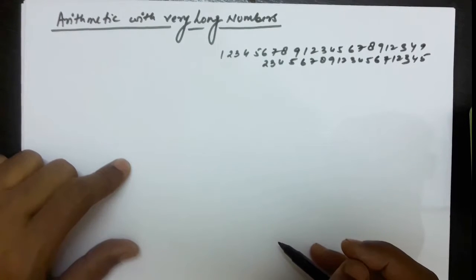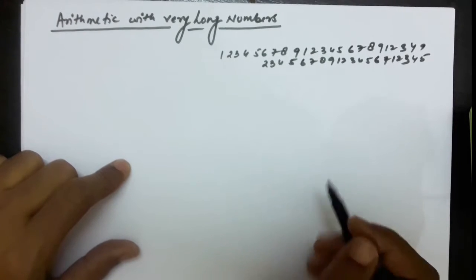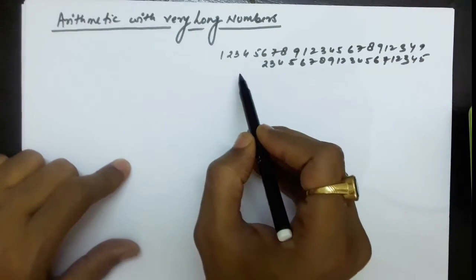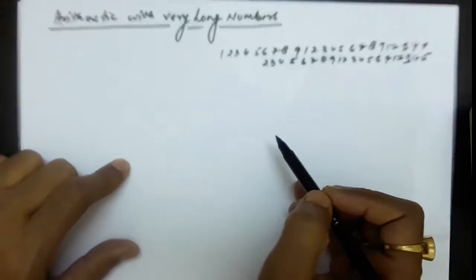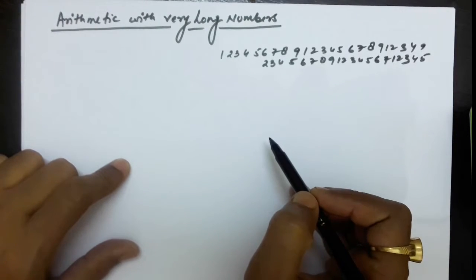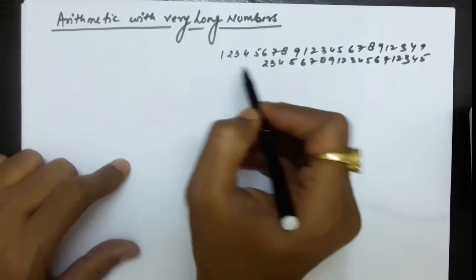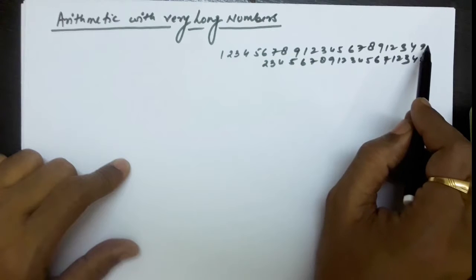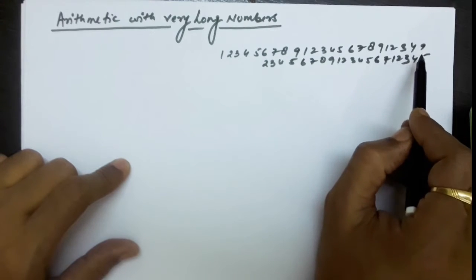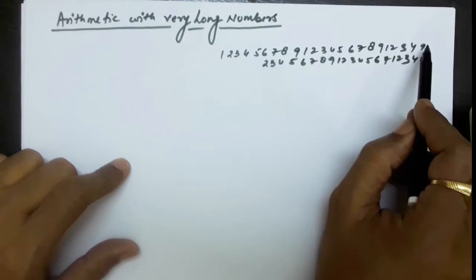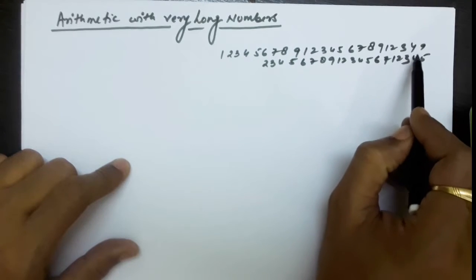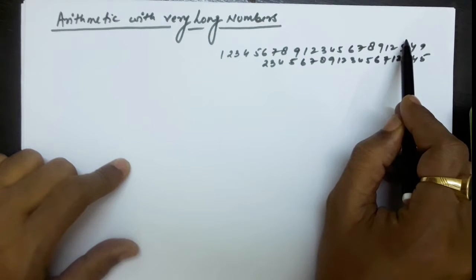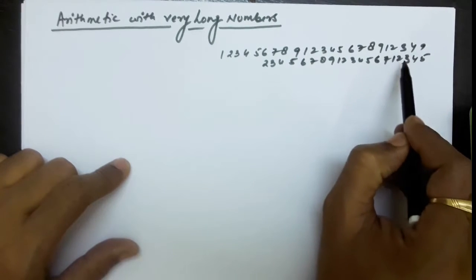One option would be to store all the digits in one array for the first number and the other number also in the next array. If you have two arrays for storing these two numbers, you can start performing addition of the two numbers, and if a carry is generated you can forward it for the addition of the previous two digits, and similarly if carry is generated you can send it for the addition of the next digits, and so on.